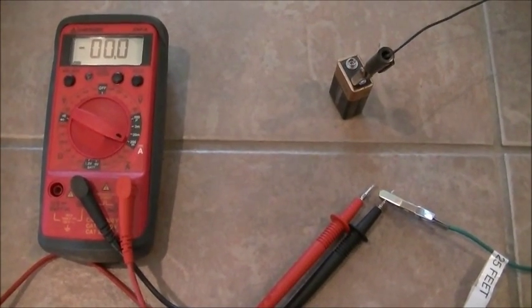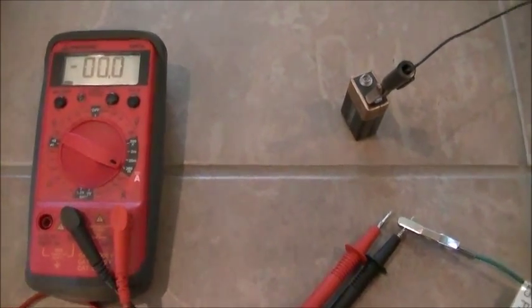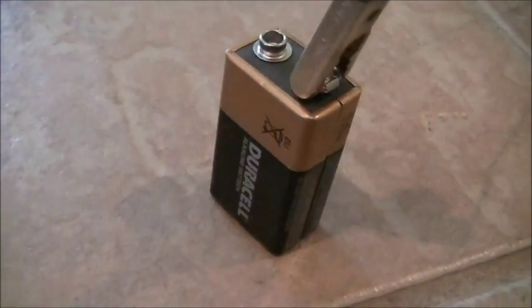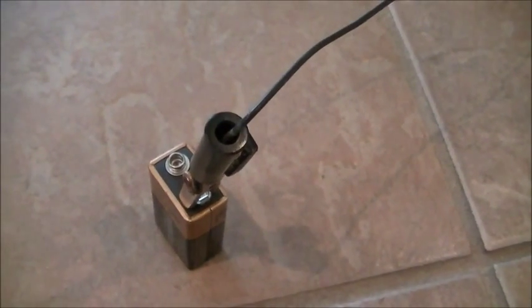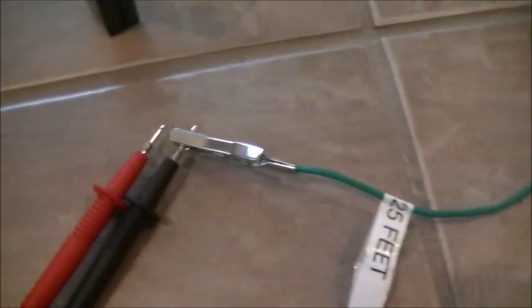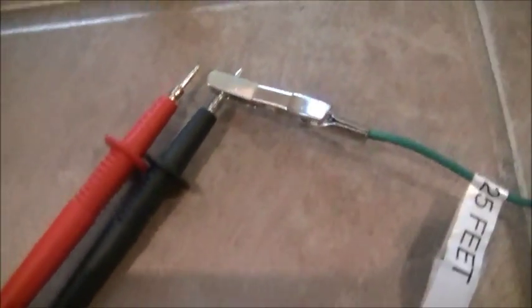This is the way I like to verify that my grounding system connections are good. We have a 9 volt battery with one terminal connected to the probe on the sidewalk and the other probe in the back garden. The 8 foot ground rod is connected to our negative terminal.